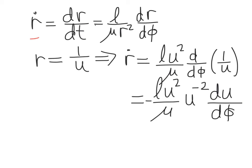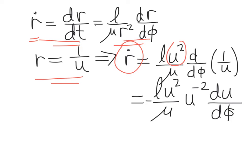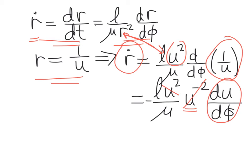Now consider the first time derivative of r. That is d r by dt, and we replace the time derivative with our phi expression. Substituting r equals 1 over u, r dot becomes L u squared over mu times d by d phi acting on 1 over u. The phi derivative of 1 over u gives u to the minus 2 times du by d phi, so the two u's cancel out, which simplifies our equations quite a lot.